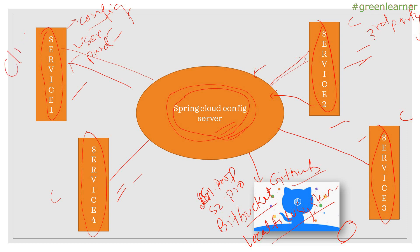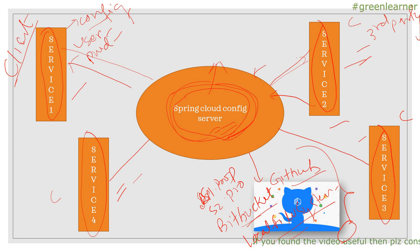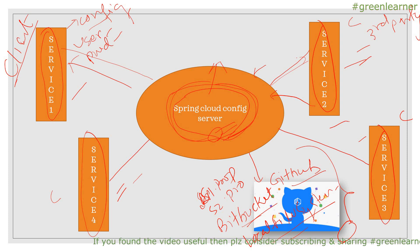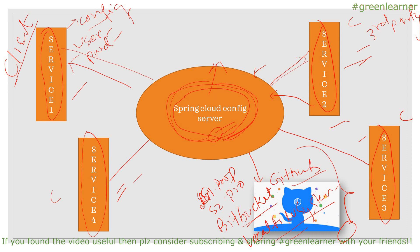We call these services clients, and this is the Spring Server. They look into this Spring Cloud Config Server for those properties, and any changes made to the repository — whether GitHub, Bitbucket, or local file system — these changes take effect in the Spring Cloud Config Server and will be notified to Service One, Two, Three, and Four in real time. So this is all about Spring Cloud Config Server, how it works, and how we can take advantage of it.